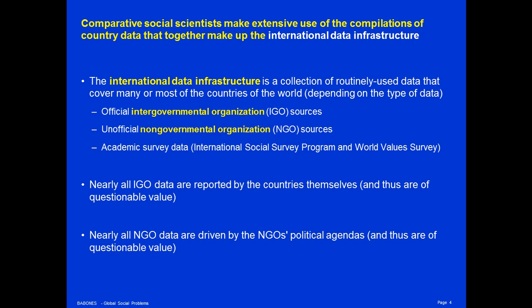For IGO data, nearly all of the data are reported by the countries themselves. They are not collected independently by the IGOs, and thus the data are of questionable value, because countries always have political motives for reporting the data they report. Nearly all NGO data are driven by the NGO's political agendas, and thus are of questionable value, because they, to some extent, reflect the desired outcomes or the political mindset of the NGO itself.